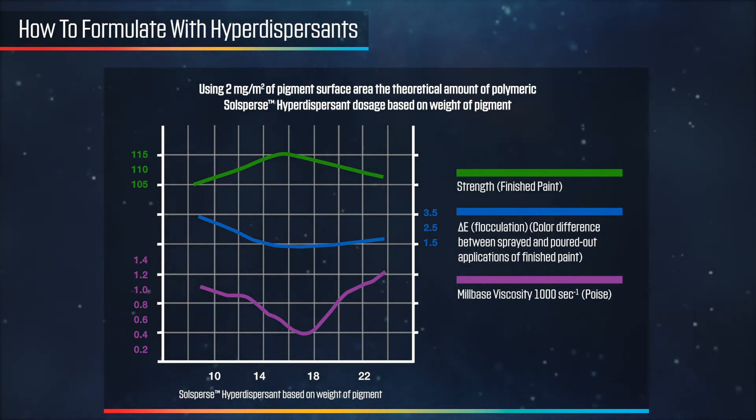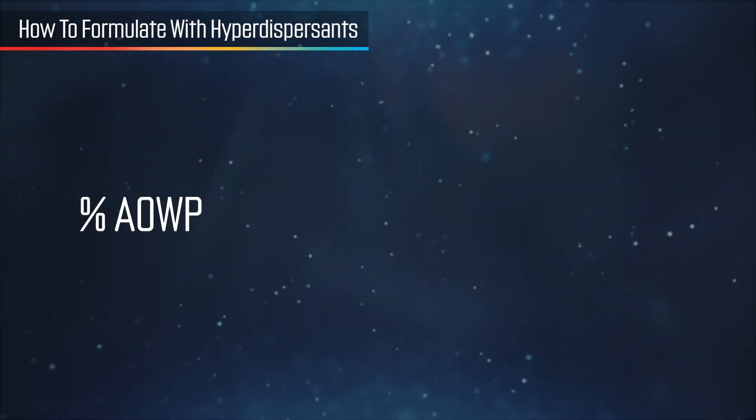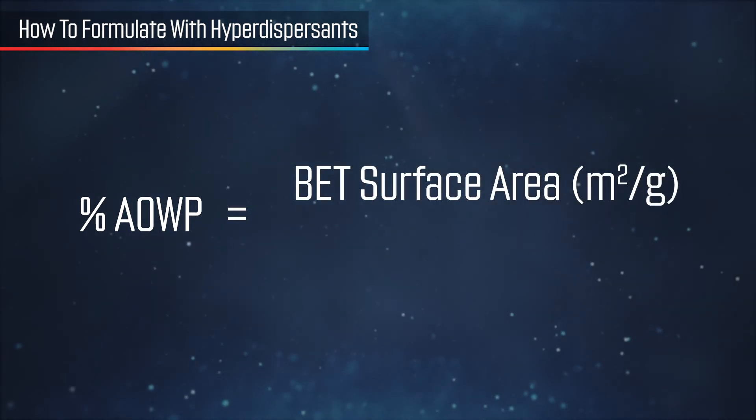Through experimentation, it has generally been established that the theoretical dosage level of a hyperdispersant in a pigment dispersion equates to 2 mg of dispersant per square meter of pigment surface area. This can be expressed as percent agent on the weight of pigment, or percent AOWP. Percent AOWP equals BET surface area in meters squared per gram divided by 5.